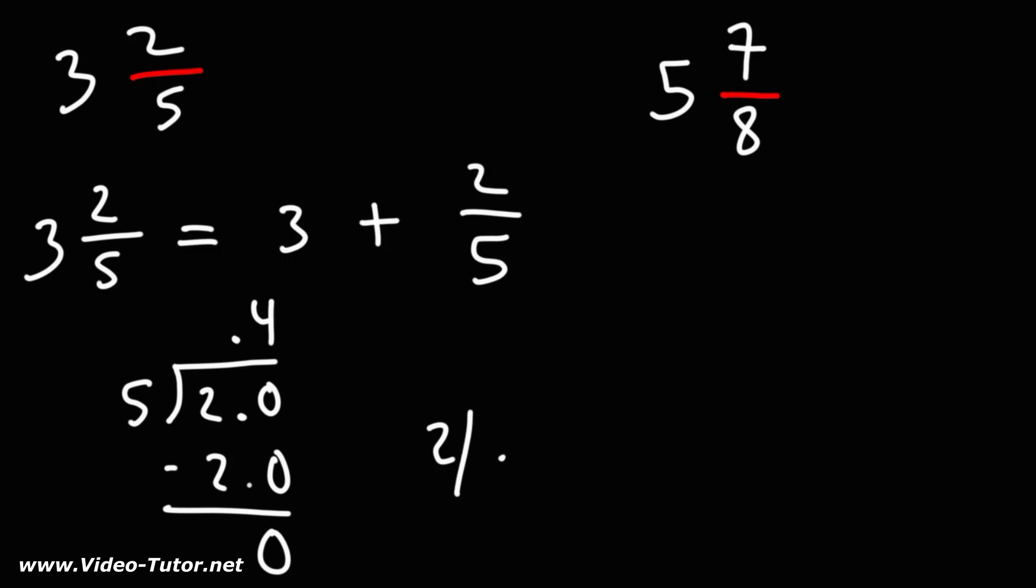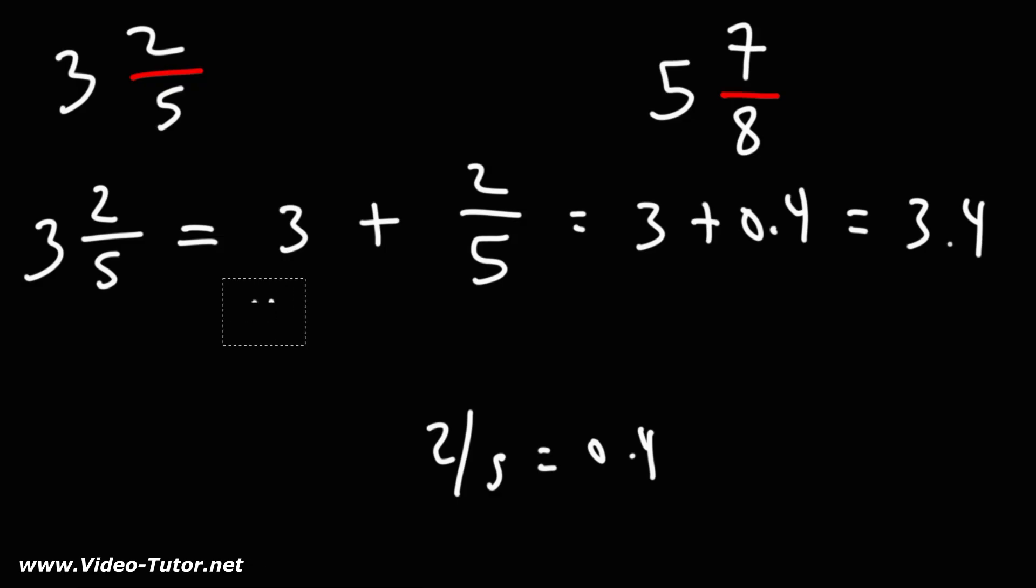So 2 over 5 is equal to 0.4. So this is 3 plus 0.4, which gives us 3.4. That's the decimal equivalent of the mixed number 3 and 2 fifths. It's 3.4.